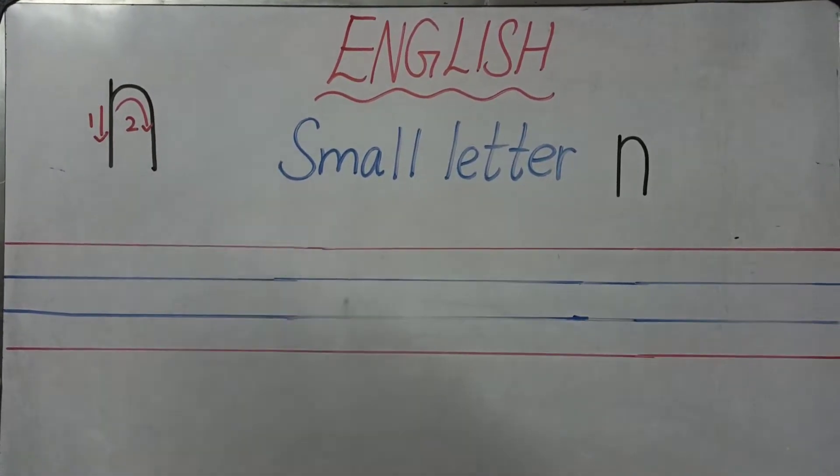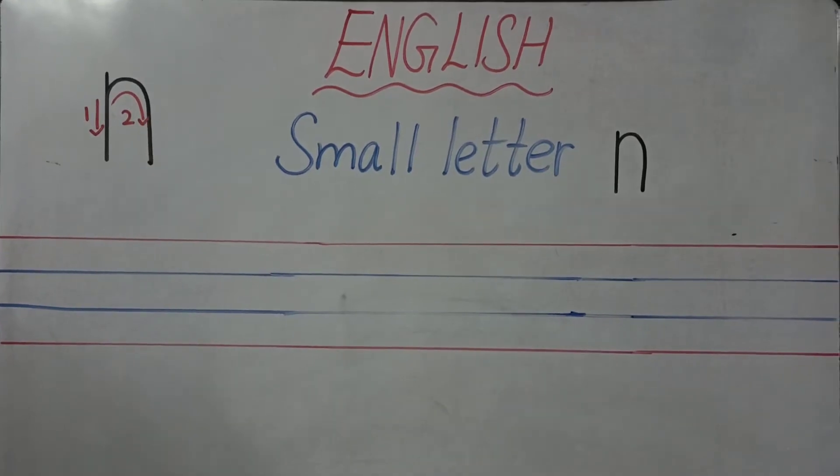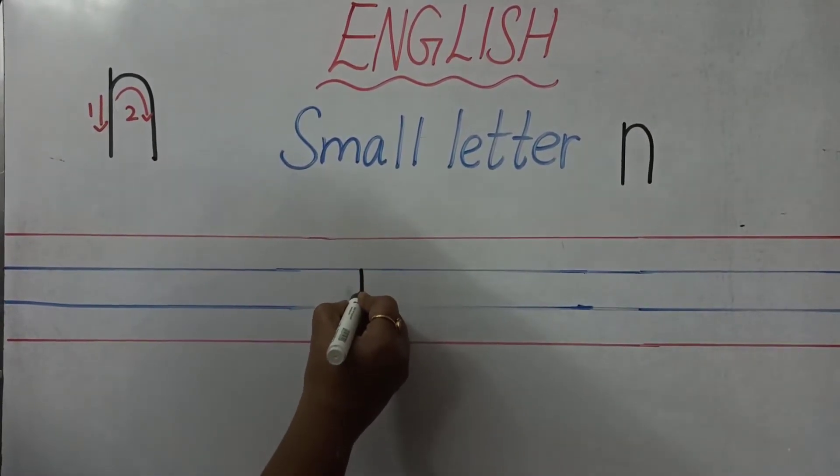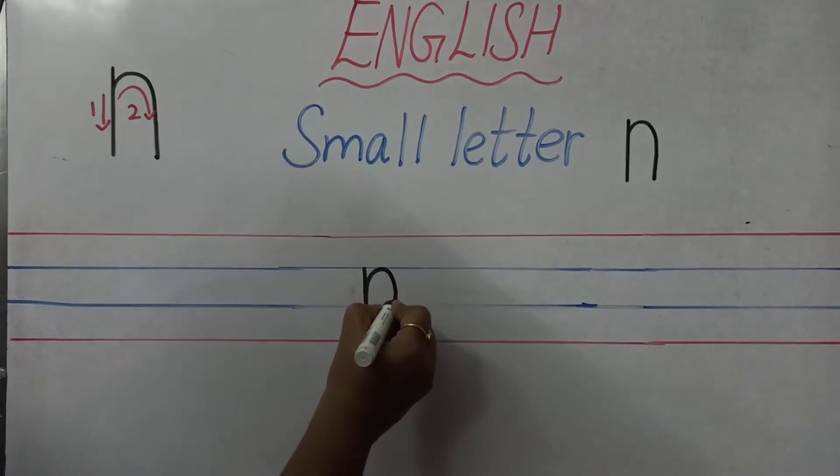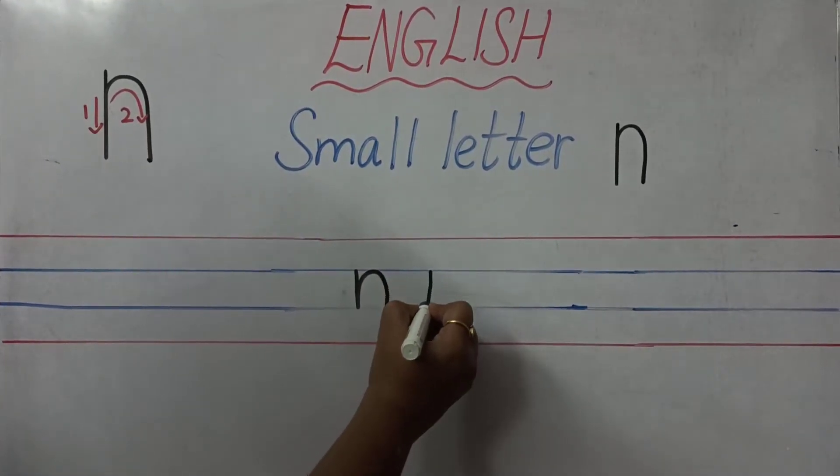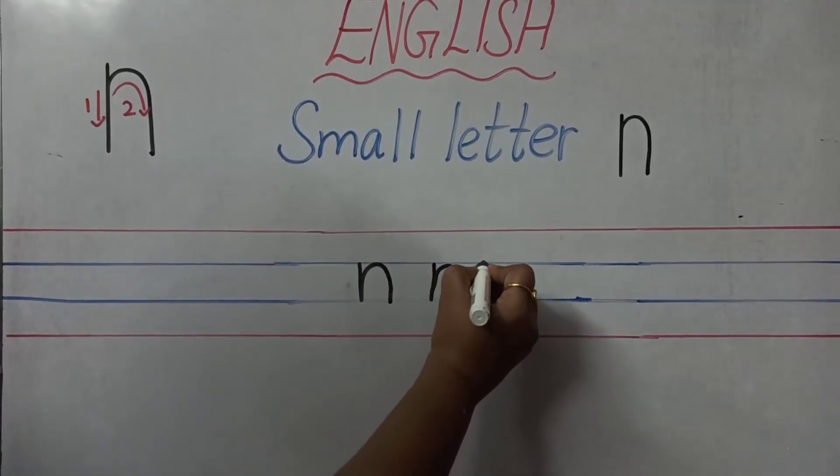Start as a standing line. Go back and make an inverted U curve. This is called small letter N.